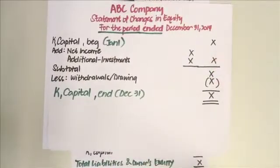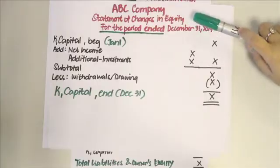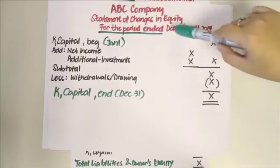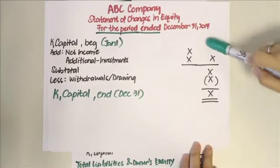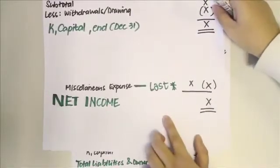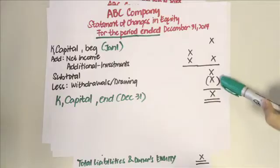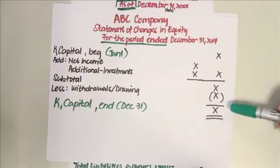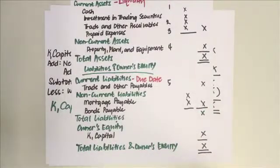Now we move on to the statement of changes in equity. Don't forget the heading: company name, type of statement, and the date 'for the period ended December 31, 2014' — same as the income statement, since we're tracing changes in the capital account over the whole period. You start with beginning capital, add net income from the income statement, add additional investments to get the subtotal, then deduct drawings or withdrawals to get ending capital, which then feeds into the statement of financial position — that's how they're interrelated.